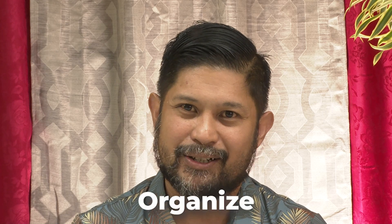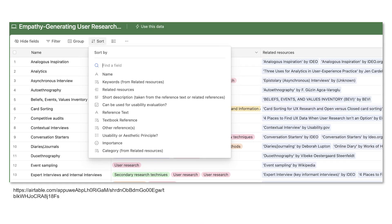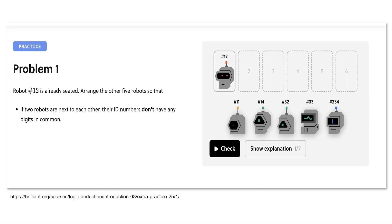In organizational interactions, users engage in sorting and arranging information, organizing data based on specific criteria or preferences. In this example from one of the courses that I teach, an interactive table allows students to sort, group, and filter various methods for doing user experience research. This example from brilliant.com shows how users can drag and drop different elements into different slots in order to solve a problem.